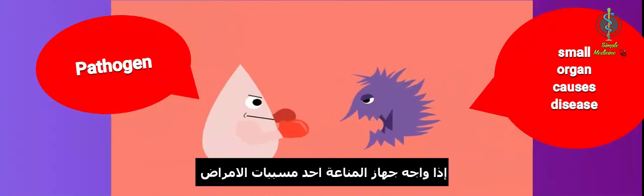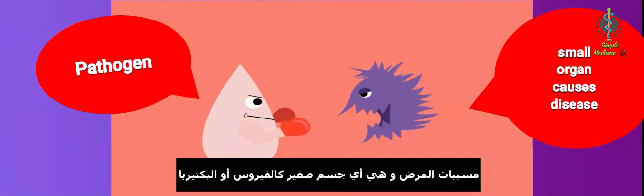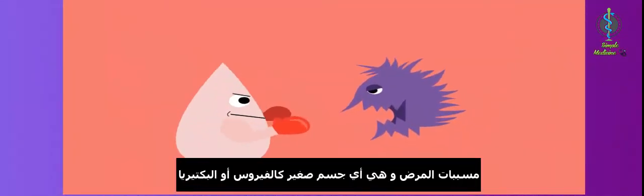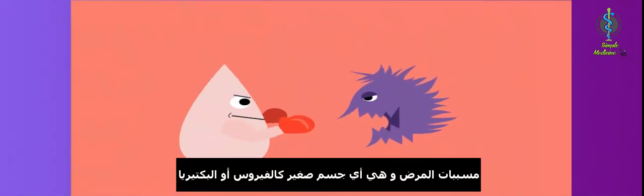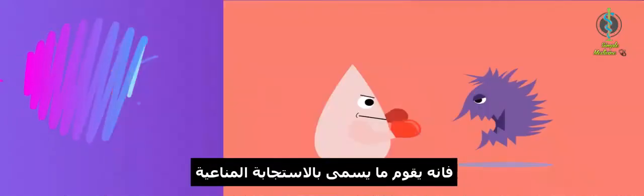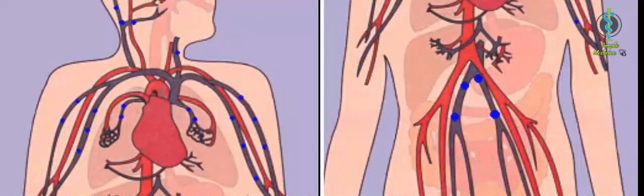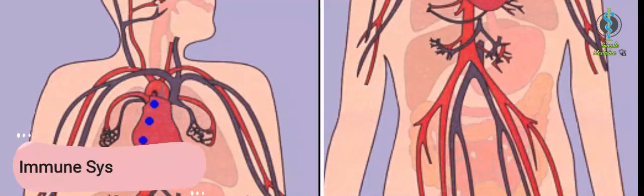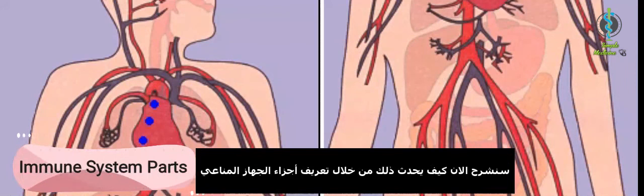If the immune system encounters a pathogen - a pathogen is any small organism such as virus or bacteria which can cause disease - it mounts a so-called immune response. We're going to explain this now by introducing the immune system main parts.